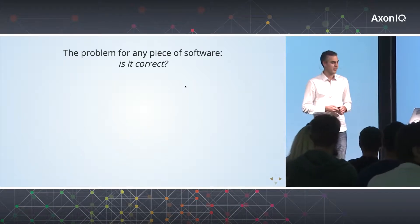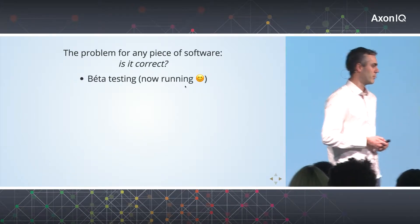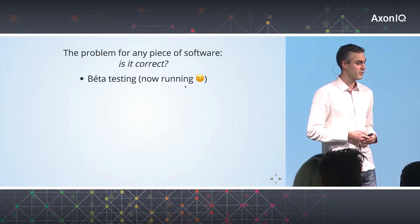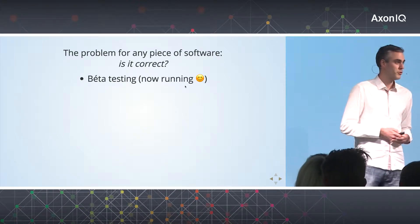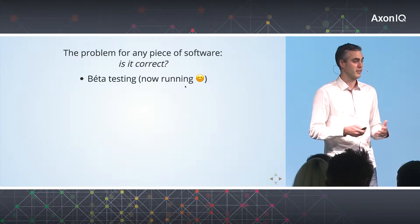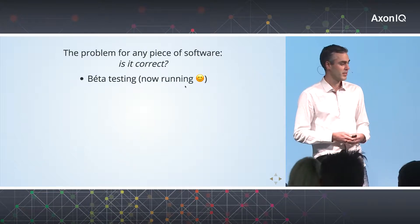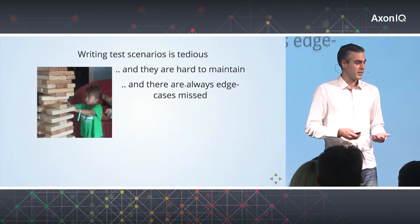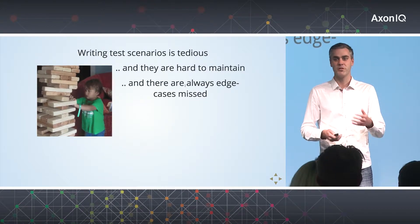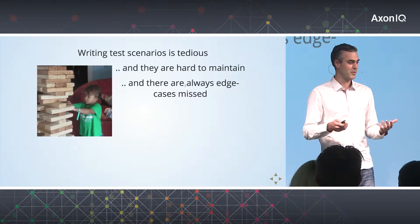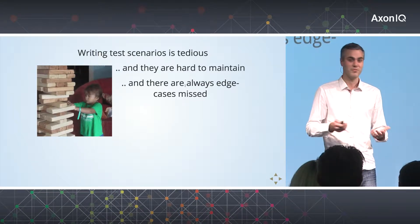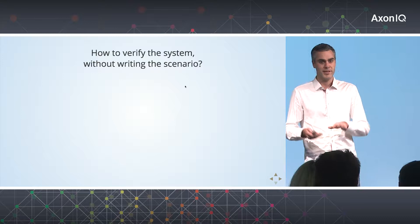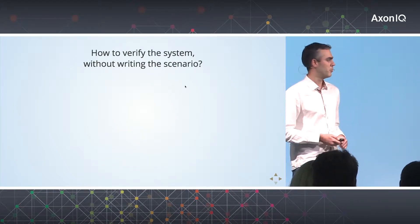Of course there are several ways how you can verify that, and currently we are running beta tests. But it's not always that you can use your users to be your testers, and there are other ways to verify the quality of your software. There are unit tests and integration tests. But there is a problem: writing test scenarios is tedious, and the more you zoom out from your software, the more setup for fixtures you have to do, and there are always edge cases missed as well.